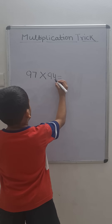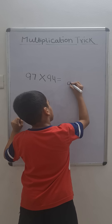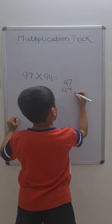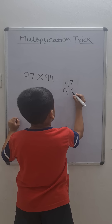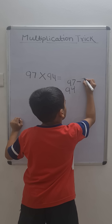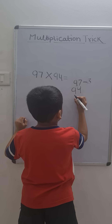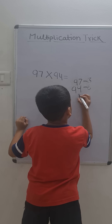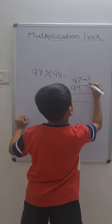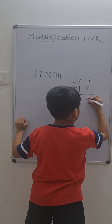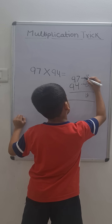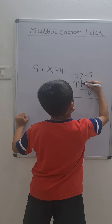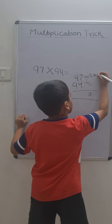97 multiplied by 94. Right here 97 and right here 94. The difference between 100 and 97 is 3, and the difference between 100 and 94 is 6. Multiply these numbers: 3 times 6 is 18.